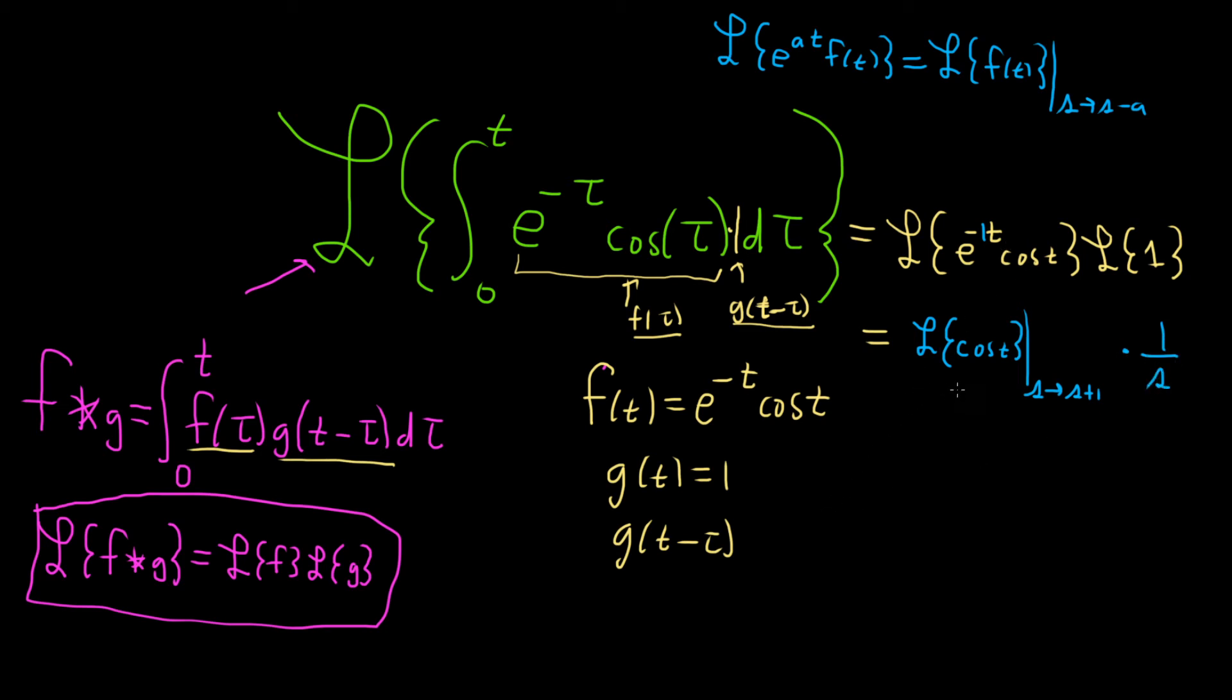So the formula for the Laplace of cosine t is s over s squared plus, so if it was kt it would be k squared, but because it's 1t it's just one squared. And then we go from s to s plus one and then we still have times one over s.